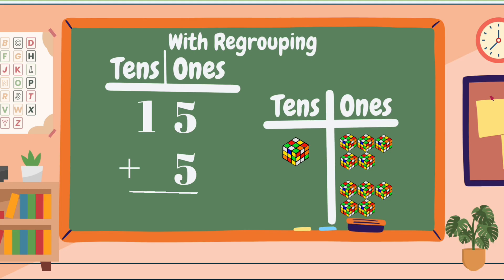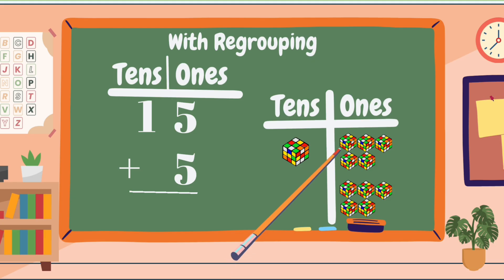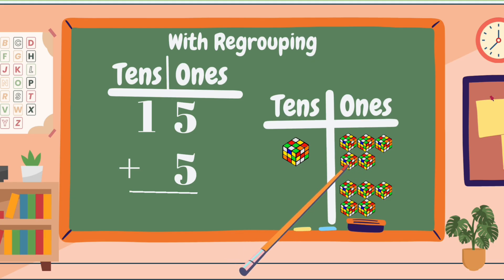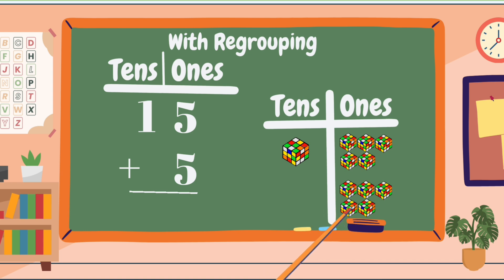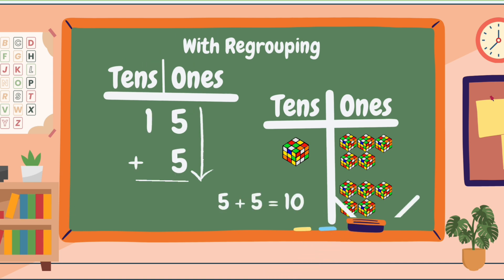Now, children, let's count all the Rubik's cubes in the ones column: 1, 2, 3, 4, 5, 6, 7, 8, 9, and 10. Then 5 plus 5 equals 10. The number 10 has two digits — the 1 and 0. So we put the 0 aligned to the ones, which is under the 5.